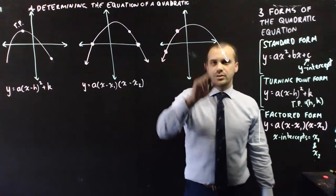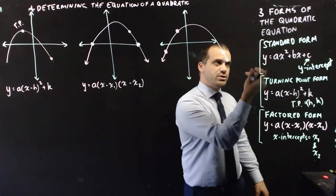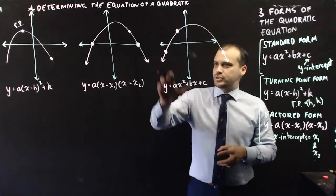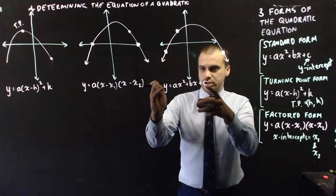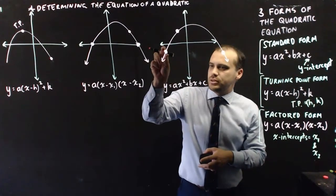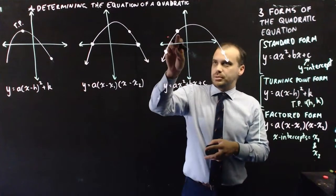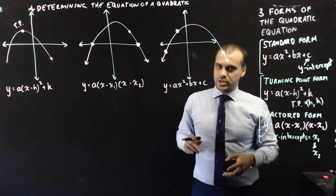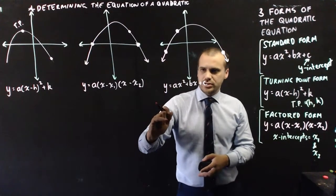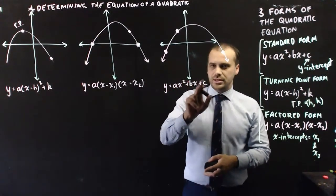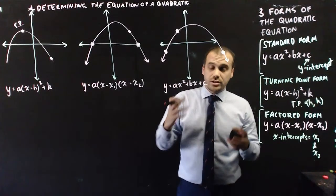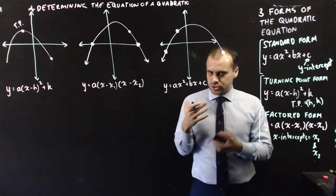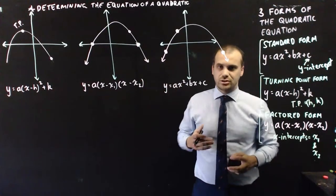If you're given three random points, your only real option is to use standard form. What you have to do is write the equation three times, sub each point in for y and x to get three equations with three unknowns: a, b, and c. Then you solve those three equations simultaneously. It's very difficult to do by hand, but if you have a calculator you can type the three equations in and get a solution that way.